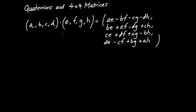Let me briefly remind you how we multiply two quaternions, or at least what that's going to look like. Suppose we have two quaternions, the first being given by A, B, C, D, and the second quaternion being given by E, F, G, and H. When you multiply the two together, you're going to get a pretty long formula, but not too complicated. The new first component, or the scalar component, is going to be given by this formula written here.